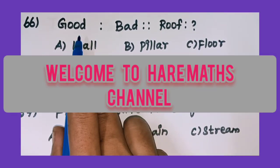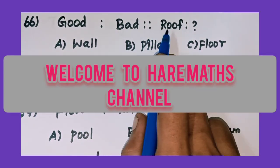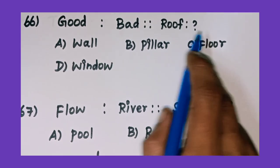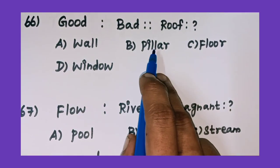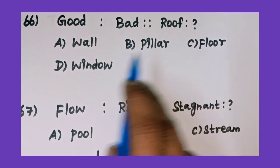66th question: good is to bad as roof is to what? Option A: wall, option B: pillar, option C: floor, and option D: window.